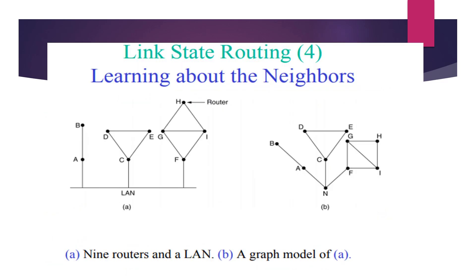First thing is learning about neighbors. The figure shows a sample network showing how the nodes are connected and the graph model of nine routers in a simple LAN type of connectivity. When the router is booted, its first task is to learn who its neighbors are. Every router is going to follow that. It accomplishes this by sending a special hello packet on each point-to-point line. The router on the other hand is expected to send back a reply telling who it is, and these names must be globally unique so that its identification must be unique. Here you can see the router arrangement in the form of a graph model representation.